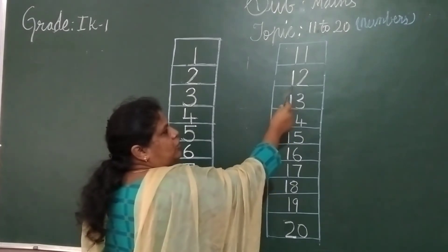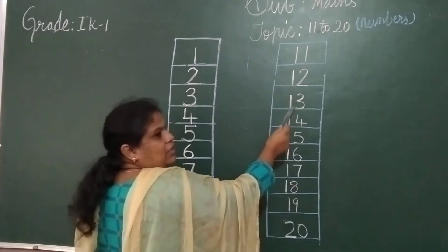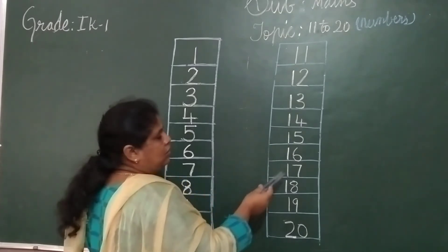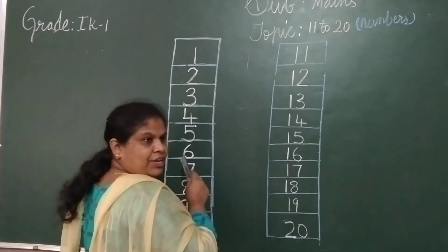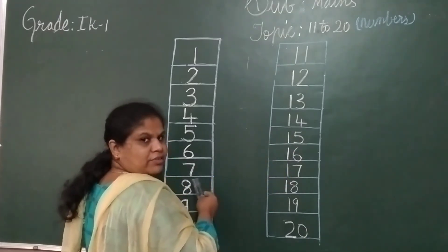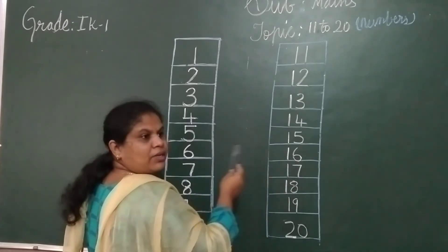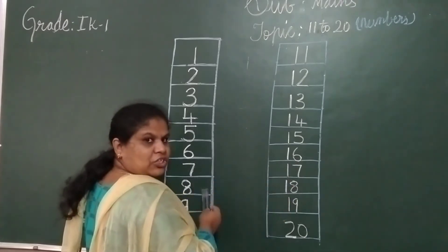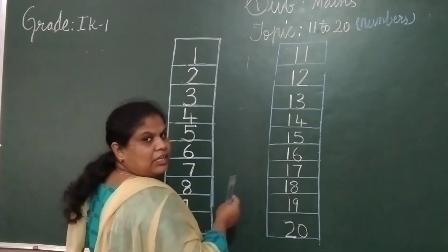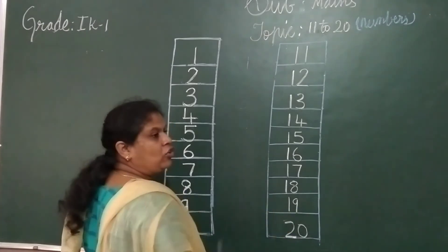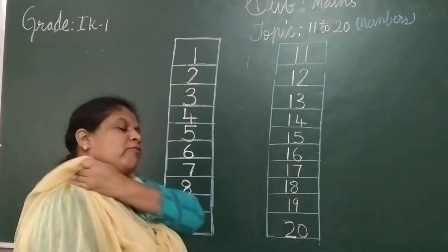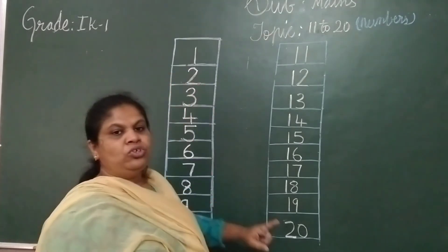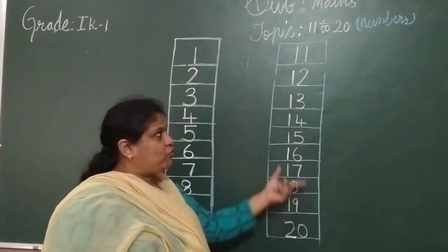One more time: 1, 1 — 11. 1, 2 — 12. 1, 3 — 13. 1, 4 — 14. 1, 5 — 15. 1, 6 — 16. 1, 7 — 17. 1, 8 — 18. 1, 9 — 19. 2, 0 — 20.